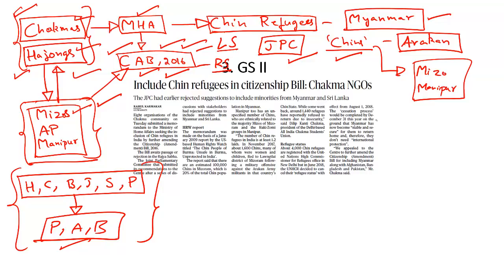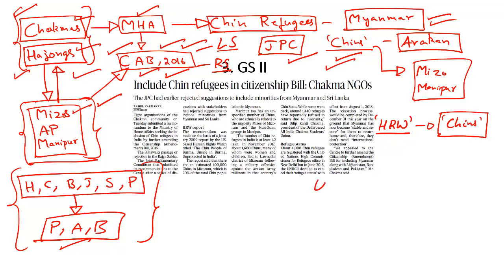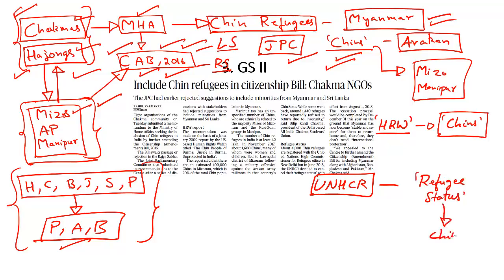The Chakmas base their argument on a report by Human Rights Watch, which says Chins are facing massive violence and persecution at the hands of militant and ethnic groups in Myanmar — potentially a valid ground for granting citizenship. However, the UNHCR has removed the refugee status granted to Chins because of the improved political climate in Myanmar, stating that Chins no longer need international protection and their refugee status has been revoked.